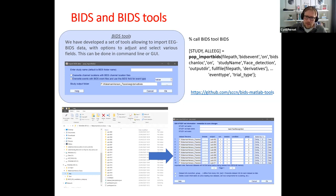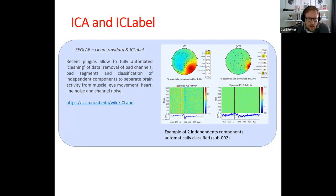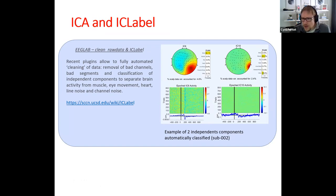From that step forward, you do your data preprocessing — signal preprocessing. There are a couple of new plugins in EEGlab: Clean Raw Data and IC Label. I'm going to focus on IC Label. IC Label classifies ICA components to separate brain activity from muscles, eye movements, heart, brain noise, and channel noise. It's a machine learning algorithm that has been tested and deployed on thousands of components.